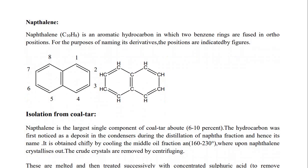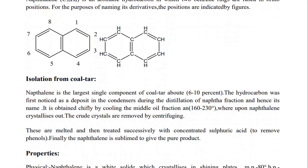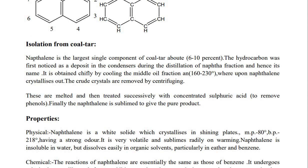Naphthalene (C10H8) is an aromatic hydrocarbon in which two benzene rings are fused in the ortho position. For the purposes of naming its derivatives, the positions are indicated by figures from 1 to 8. Naphthalene is the largest single compound of coal tar, about six to ten percent. The hydrocarbon was first noticed as a deposit in the condenser during the distillation of the naphtha fraction, and hence it was named naphthalene.